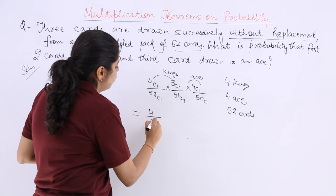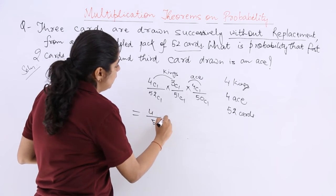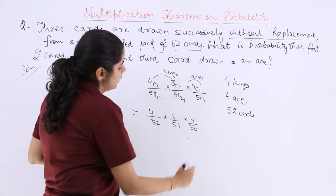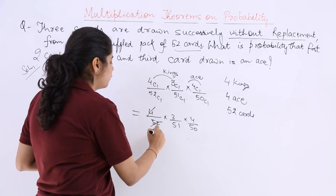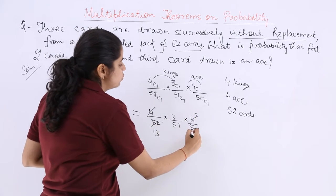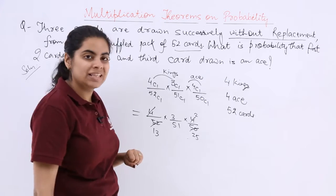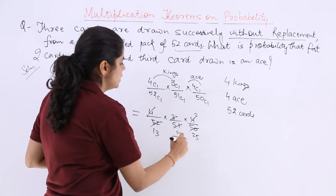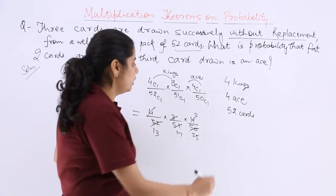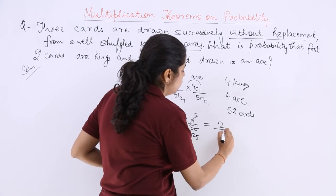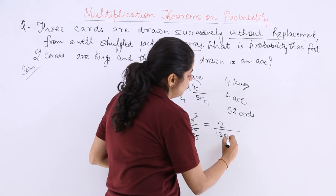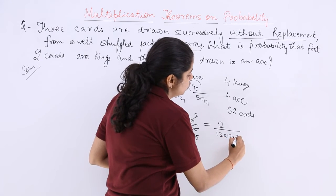Now let's solve: 4 over 52 multiplied by 3 over 51 multiplied by 4 over 50. Checking for cancellations: 4 ones are 4, thirteens are... 2 twos are 2, twenty-fives are... 3 ones are 3, seventeens are... It doesn't look like anything significant cancels, so we can write 2 over the multiplication of 13 × 17 × 25.